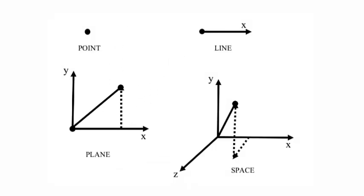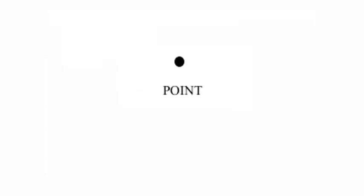Now we extend this idea to different dimensions. So what is zero dimension? You know it is a point. So the distance moved is zero.